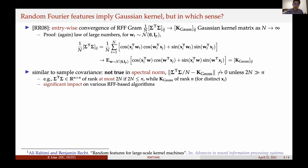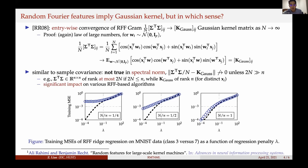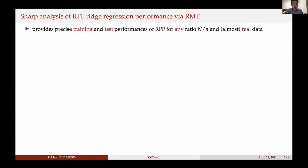Here is a plot where the blue circles are empirical training MSEs of random Fourier feature ridge regression as a function of the ridge parameter lambda on real-world data, and the black dashed lines are the theoretical guarantee offered by the Gaussian kernel. There is a large mismatch when the number of neurons N is small and for small regularization. However, using random matrix theory we can derive the red line, which perfectly matches empirical results for arbitrary ratio and arbitrary regression parameters. We can provide precise training and test performance for random Fourier features for any ratio N over n on real-world data.